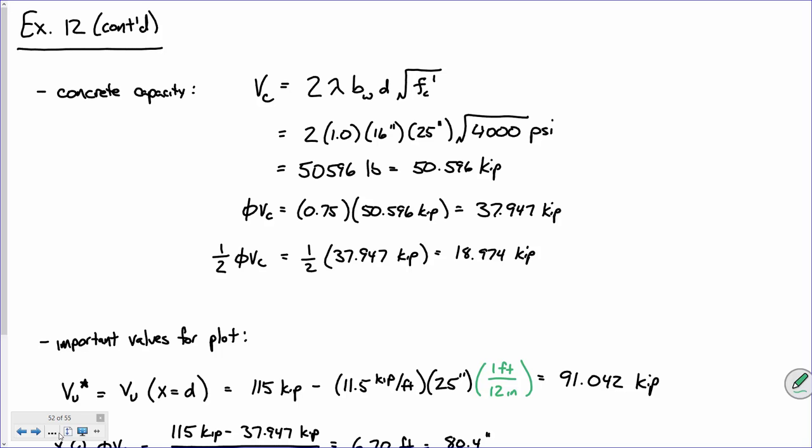To identify critical points on the shear diagram, we need to look at the concrete capacity, which is a constant. V sub C is 2 lambda BWD square root of FC prime. We're dealing with normal weight concrete, so lambda is 1. Width is 16 inches, D is 25 inches. Remember, plug in PSI, you get out PSI. Your initial calculation should come out in pounds, divide by 1000, you get about 50.5 kips. We calculate phi VC—phi for shear is 0.75—and half of phi VC, about 37.9 and 19 kips respectively.